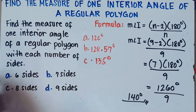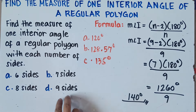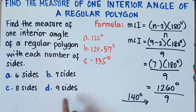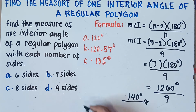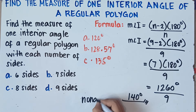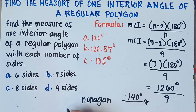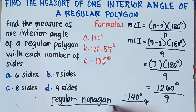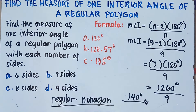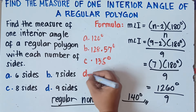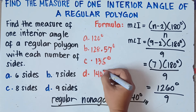A polygon with 9 sides — the interior angles are congruent because we have a regular polygon. A polygon with 9 sides is called a nonagon. Since we have a regular polygon, this is a regular nonagon. Each interior angle of a regular nonagon measures 140 degrees.